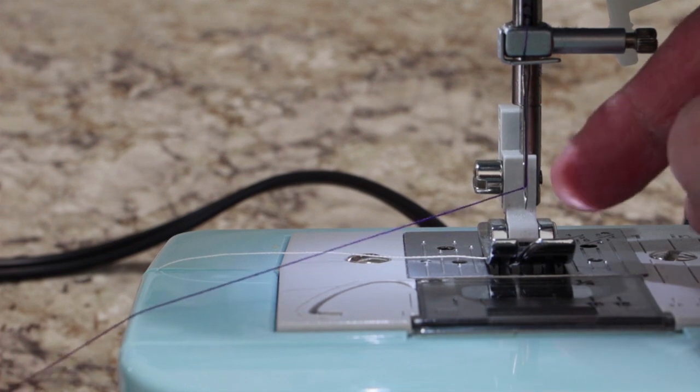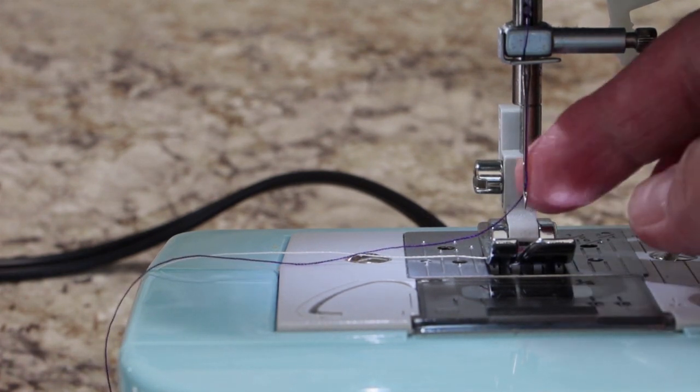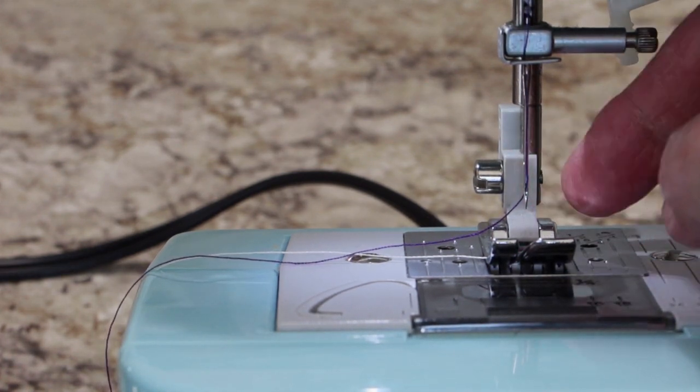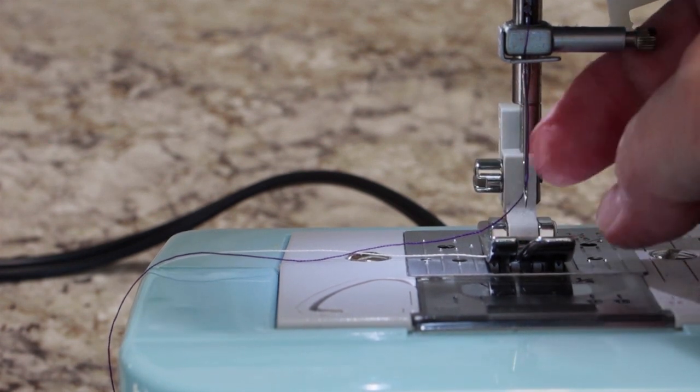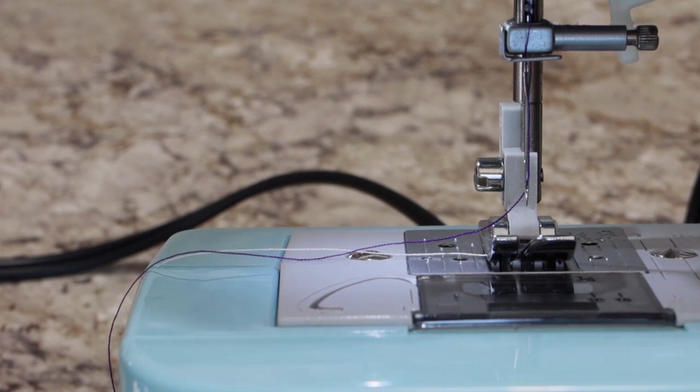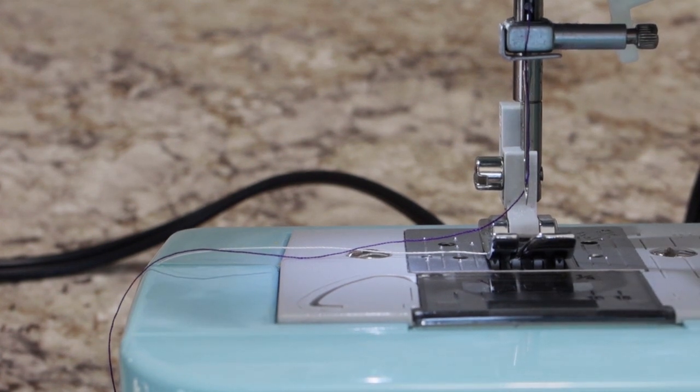Sometimes, this thread will make a loop, and as you whip it through there, it'll loop around your needle, and you don't want that. So, be careful. Make sure that your thread doesn't get looped around itself, and then you are completely threaded.